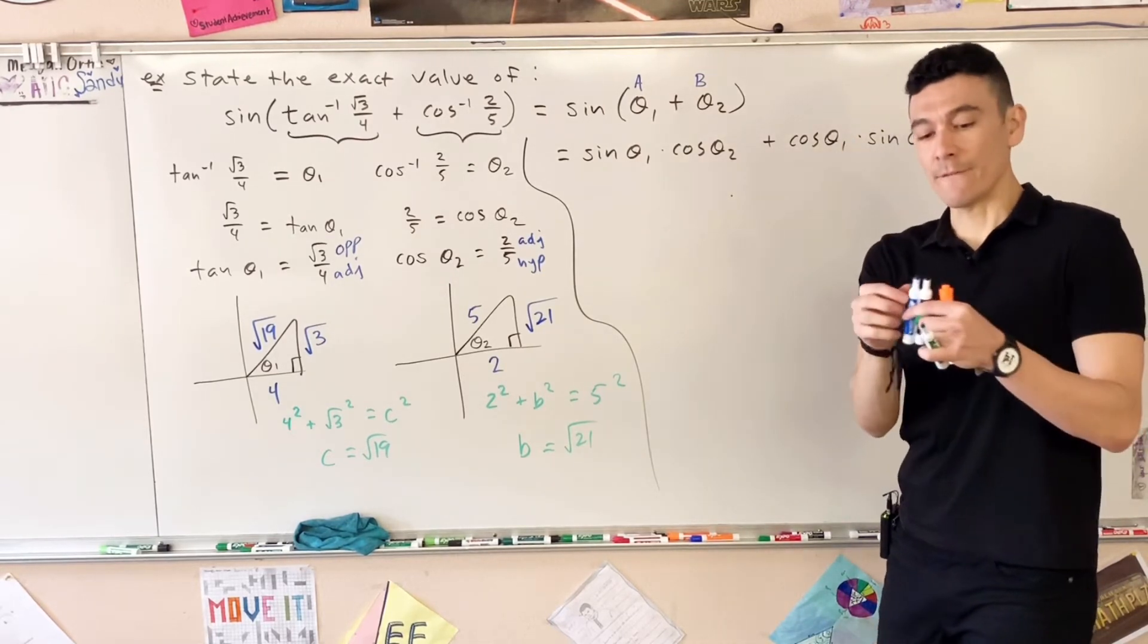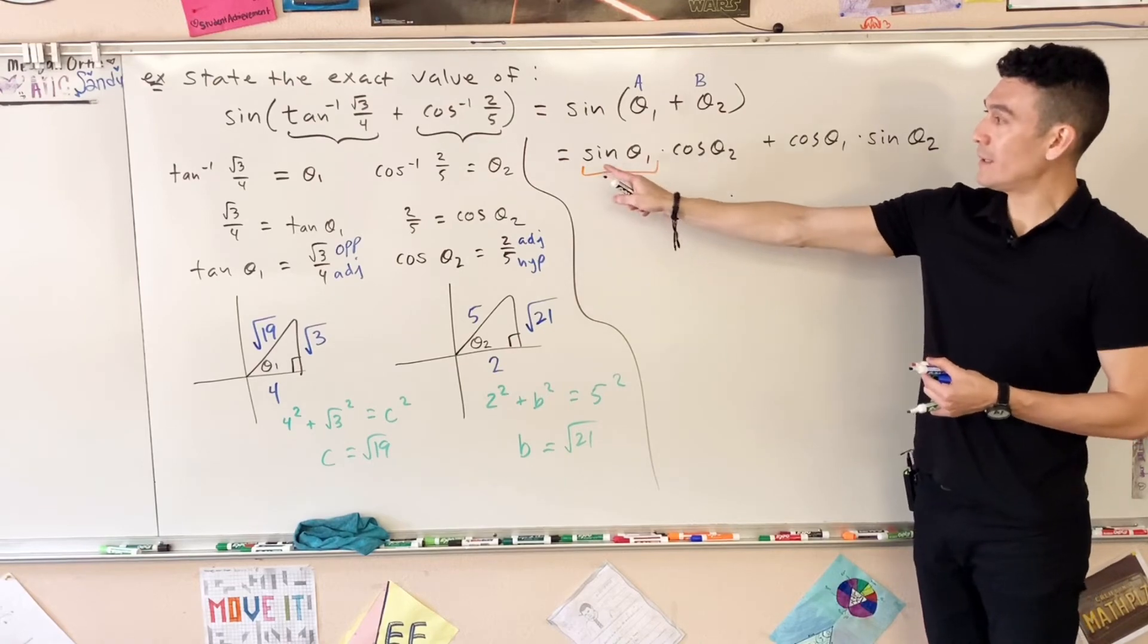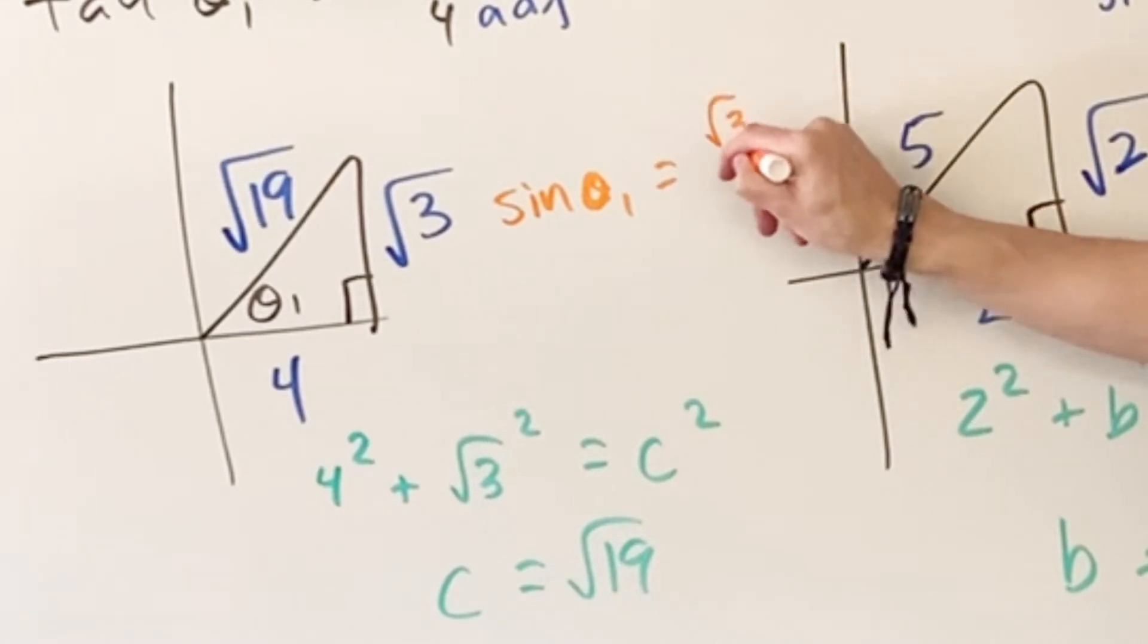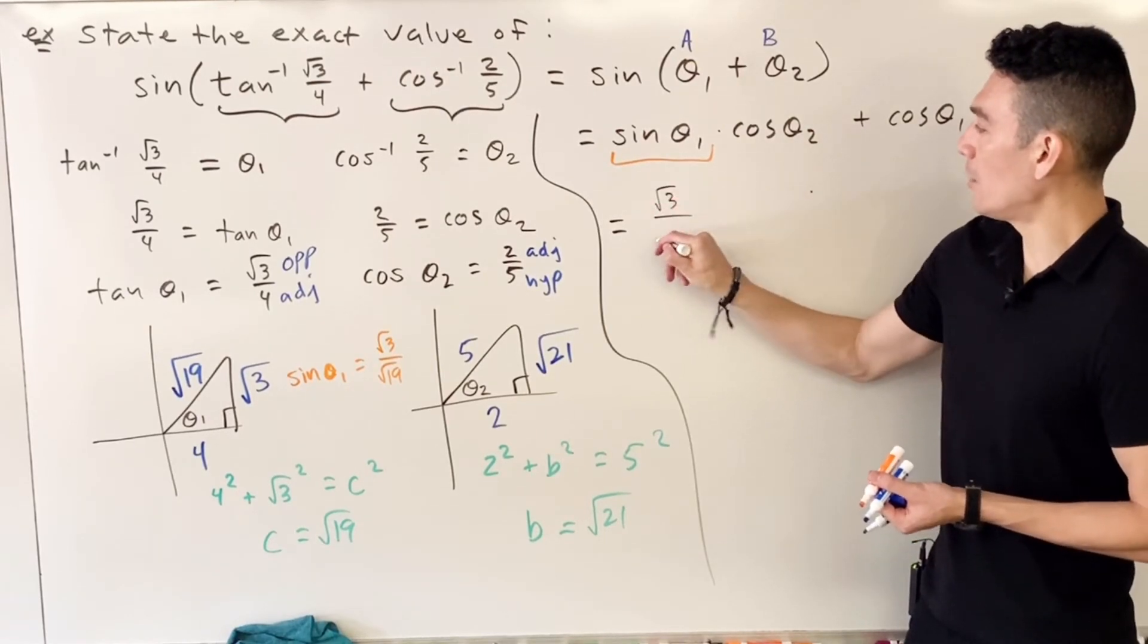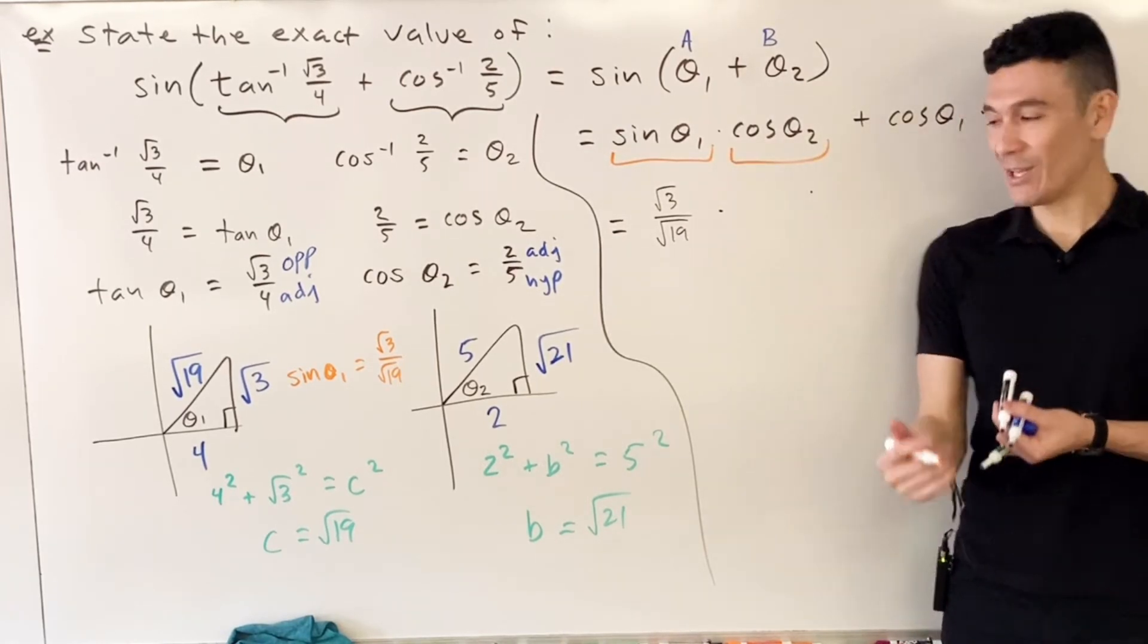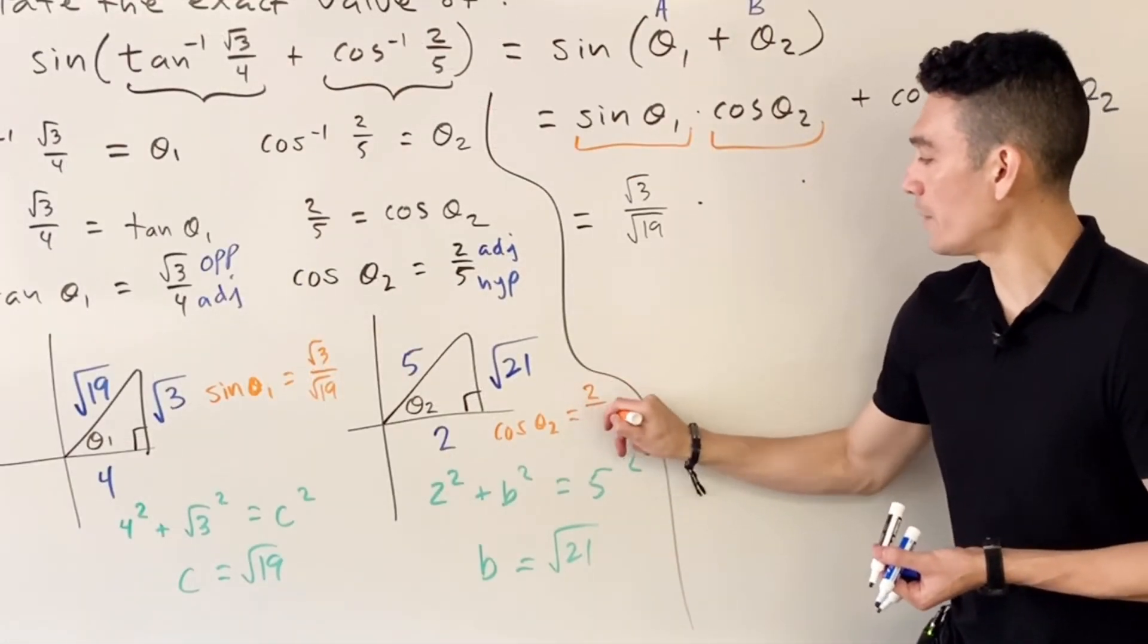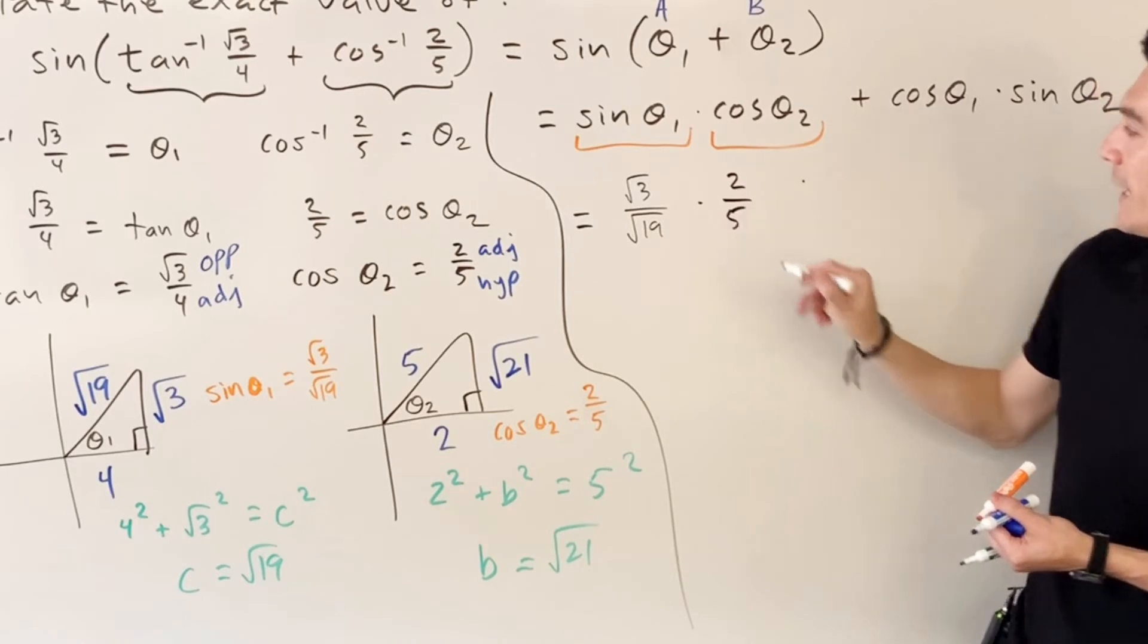So now we have four little baby pieces to play with, and then the Casio will finish this for us. What in the world is sine theta one? Well to know what that is, go to triangle theta one and tell me what sine is. Over here, theta one, sine of theta one is opposite over hypotenuse, so this becomes square root 3 over square root 19. Multiplication. Now let's find cosine theta two. Theta two is here; cosine of theta two is adjacent over hypotenuse, so that would be 2 over 5.